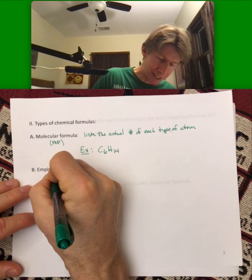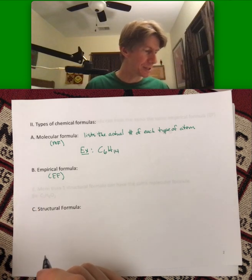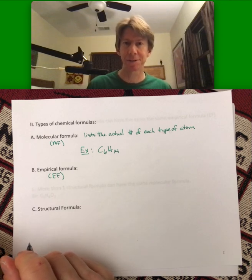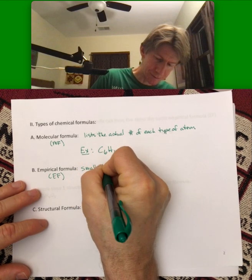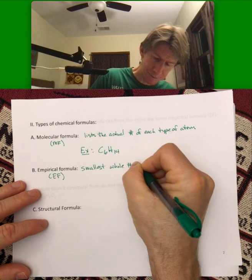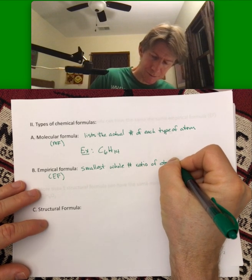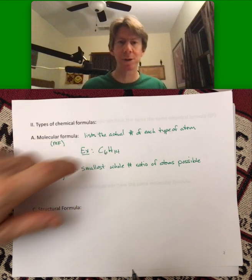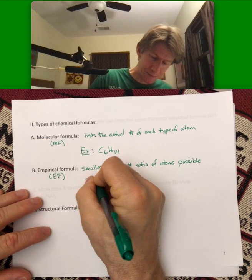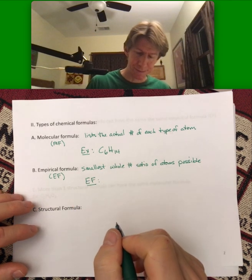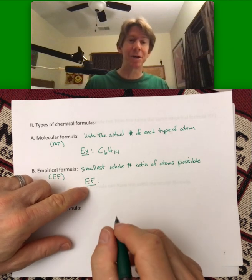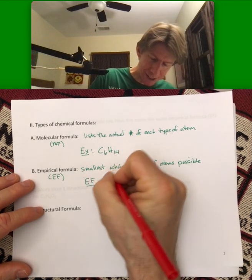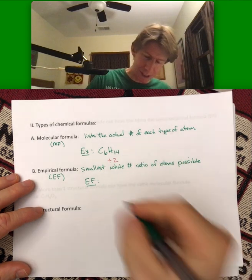Empirical formula, capital EF, the empirical formula is the formula with the smallest whole number ratio of atoms possible. For example, if C6H14 was the molecular formula, then the empirical formula EF would be the smallest whole number ratio. We can take each of these numbers and divide by two, and if we do that we get C3H7.